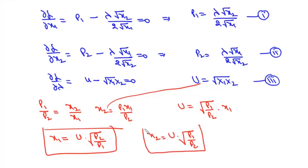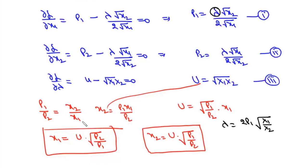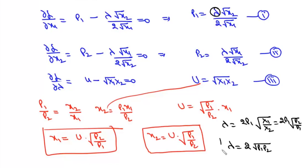Similarly, x2 = u·√(p1/p2). Now to find λ: from the first equation, λ = 2p1·√(x1/x2) = 2p1·√(p2/p1), so λ = 2√(p1·p2). That is the value of the Lagrange multiplier for the expenditure minimization problem.